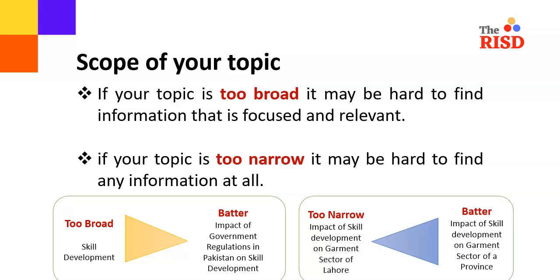Scope of your topic: if your topic is too broad, it may be hard to find information that is focused and relevant. If your topic is too narrow, it may be hard to find any information at all. One way to narrow a broad topic such as the environment is to limit your topic. Some common ways to limit a topic are: by geographical area — for example, what environmental issues are most important in Southwest United States? By culture — how does the environment fit into the Navajo world view? By time frame — what are the most prominent environmental issues of the last 10 years? By discipline — how does environmental awareness affect business practices today? By population group — what are the effects of air pollution on senior citizens? These are some examples you can follow.